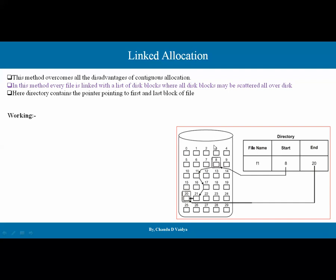We have a disk with blocks 0 to 29. We allocate blocks based on directory information. For File 1 (F1), let's say the size is 5 blocks, the starting block number is 8, and the ending block number is 20. The directory contains the starting and ending block number, but does not contain a record of the middle block numbers.